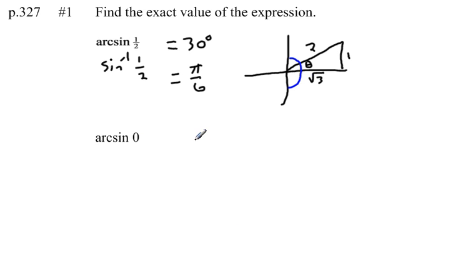Okay, second problem, arc sine of zero. This can also be rewritten as the inverse sine of zero, meaning we want to find the angle whose sine is zero.